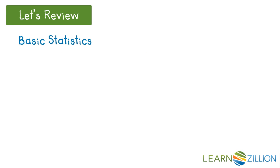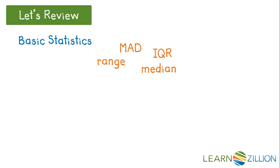Let's quickly review the five statistics used to describe data. Mean absolute deviation is a measure of how the data varies about the mean. Interquartile range is the difference between Q1 and Q3 and represents the middle 50% of the data. Median is the middle value, range is the difference between the high and low value, and the mean is the value that results from essentially evening out the data.